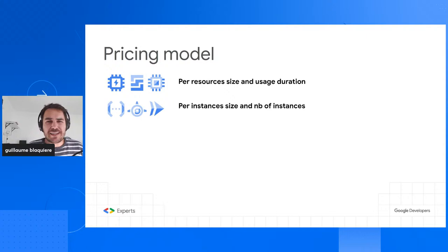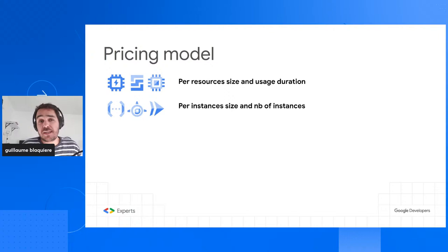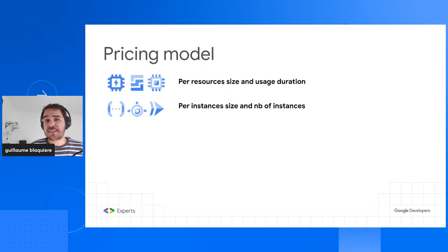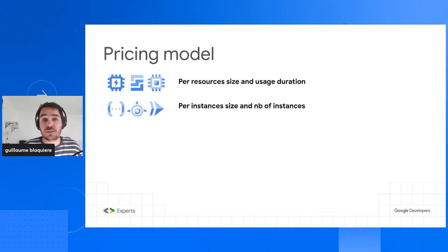For serverless, you pay for the instance size — the amount of CPU and memory — and the number of instances. There's no disk because serverless is stateless with no data persistence. Because you can scale up and down, you pay per instance. Something very interesting: Cloud Run, Cloud Functions, and App Engine can scale to zero, meaning you have nothing to pay because no CPU or memory is reserved in your project.